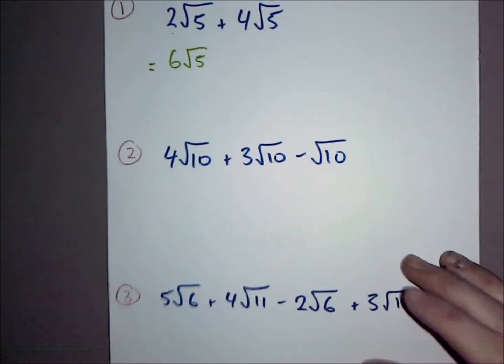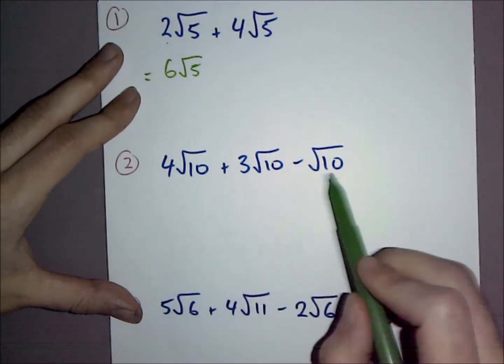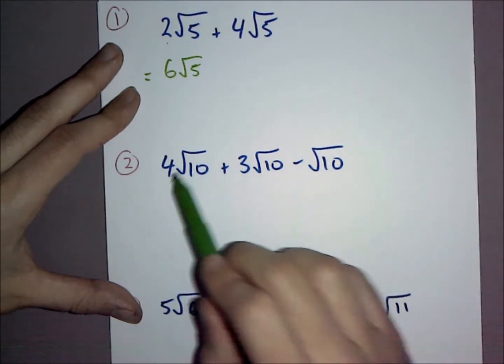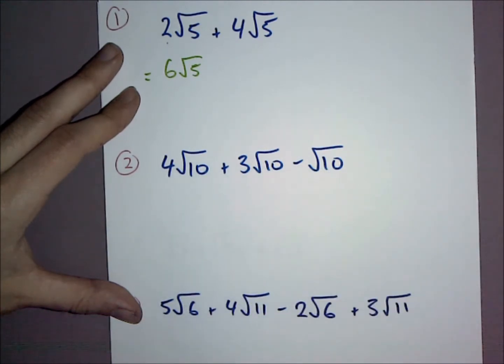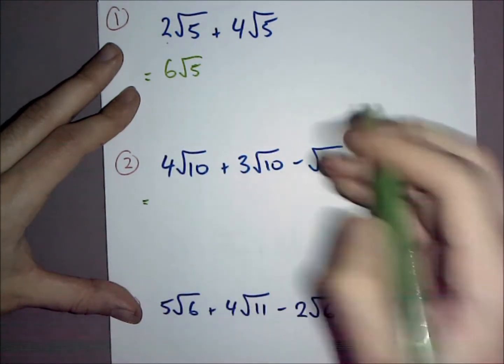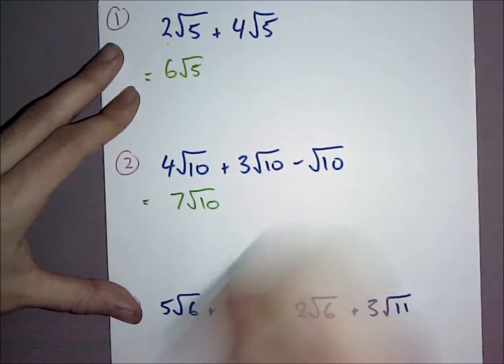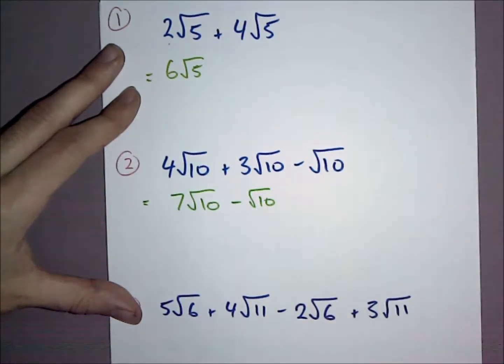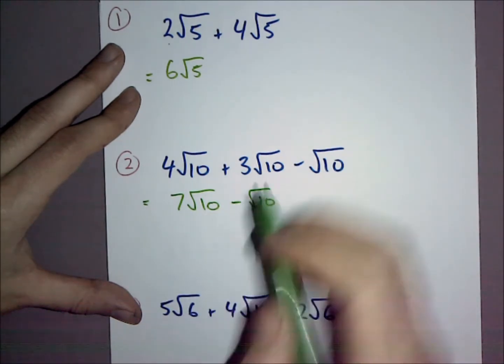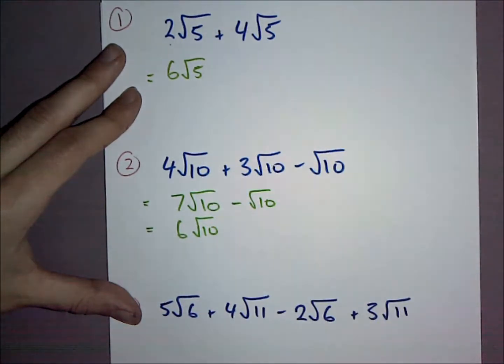Now sometimes you'll have more terms. I've got 4√10 + 3√10 - √10. You can do it all at once, but I'm going to do it two at a time. So 4√10 + 3√10 = 7√10, and I've still got to take away √10. Then 7√10 - √10, they're like terms, so 7 - 1 = 6, leaving 6√10.